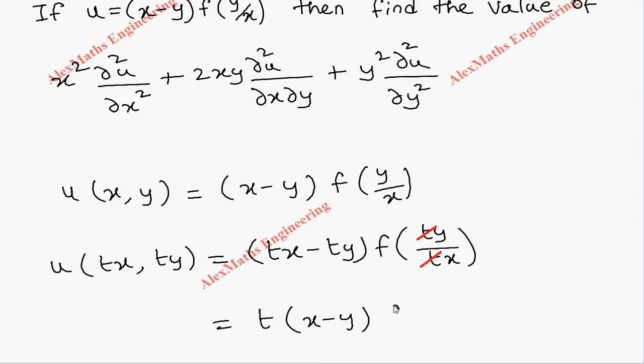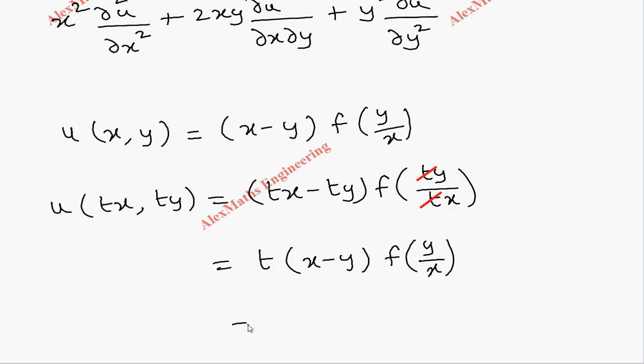So we get back the original function u of x comma y, and there is a t power 1 outside. From this it is clear the function u is a homogeneous function of degree 1.